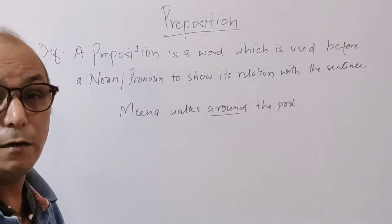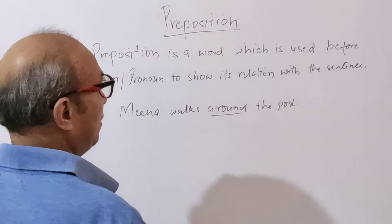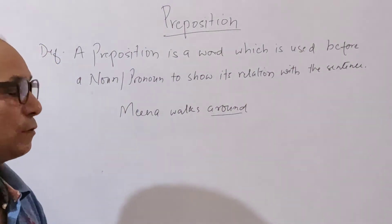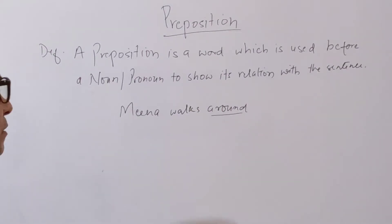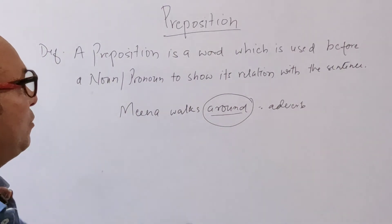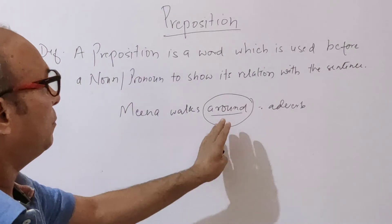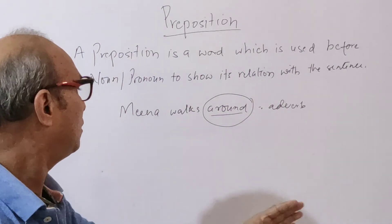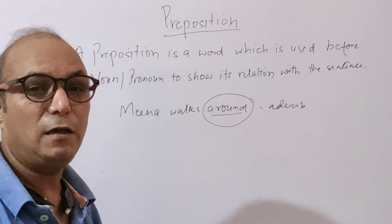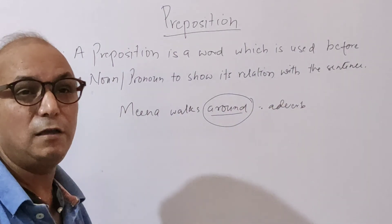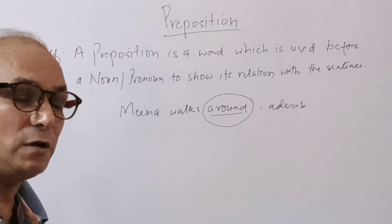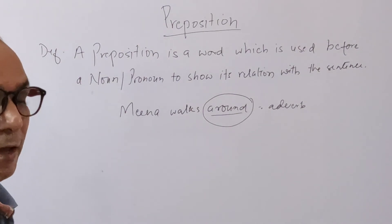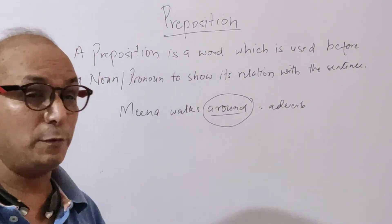If I remove the pool (object) from here, then we have a verb but no object. Without the object, the preposition becomes an adverb. The object is always a noun, and a preposition is placed before a noun or pronoun. Without an object, it qualifies the verb, making it function as an adverb rather than a preposition.